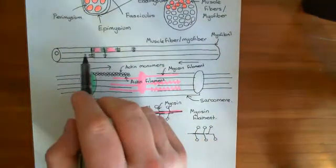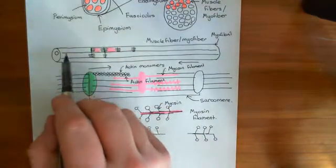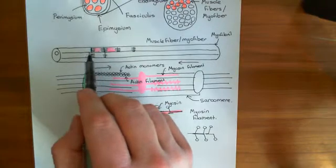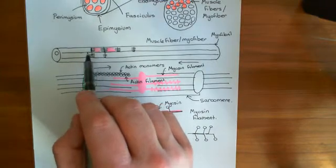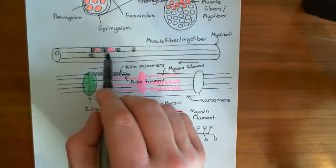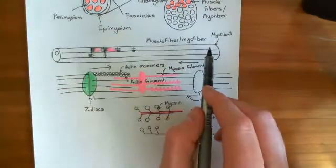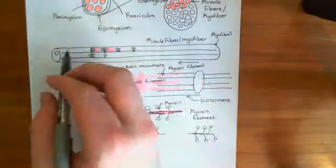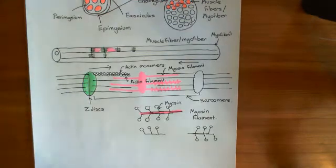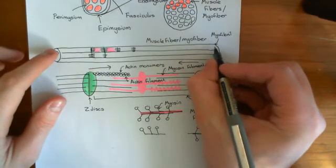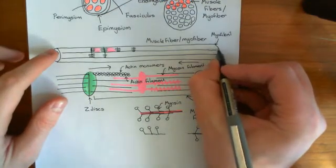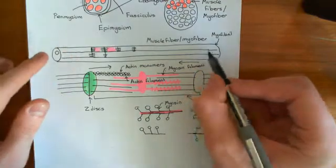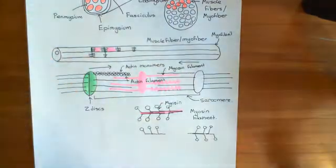When I was saying that a myofibril was a chain of Z-discs all aligned, really what it is is a chain of sarcomeres — a chain of Z-discs connected by myosin filaments in between, all aligned together. The final sarcomeres will be attached to the cell membrane at each end, and they'll pull the ends of the muscle fibre inwards. That's how you achieve contraction.